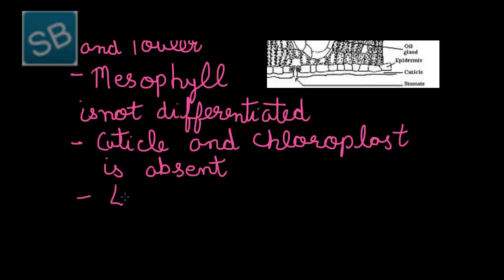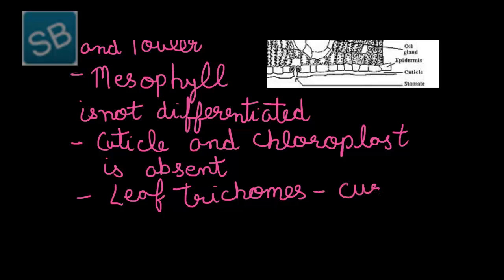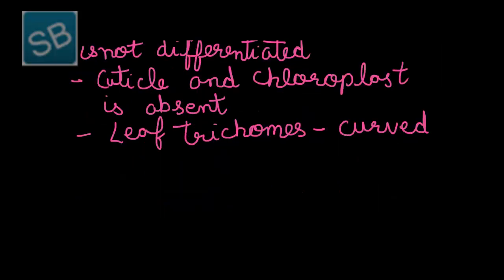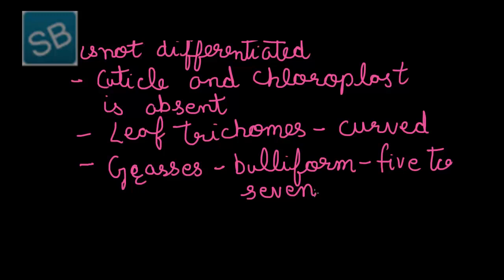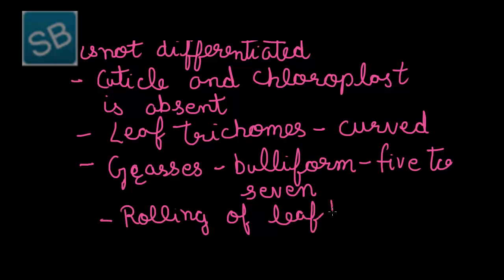Leaf trichomes occur in monocots as well. For example, in monocot plants like grasses, bulliform cells occur in a group of 5 to 7. They lack cuticle and chloroplasts. In dry conditions, they lose water and shrink, resulting in the rolling of the leaf, as a result of which transpiration is reduced.